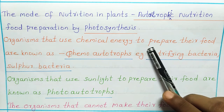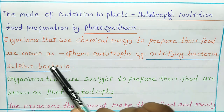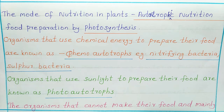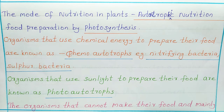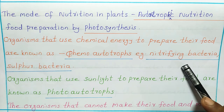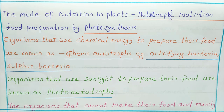Organisms that use chemical energy to prepare their food are known as chemo-autotrophs. The word 'chemo' means chemical. Examples are nitrifying bacteria and sulfur bacteria, which use chemical energy to prepare their food.